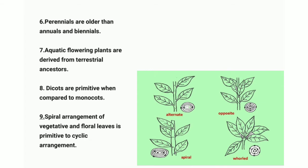Point seven: aquatic flowering plants are derived from terrestrial ancestors. Point eight: dicots are primitive when compared to monocots. When a seed is sown, dicots grow two cotyledons while monocots grow only one cotyledon.